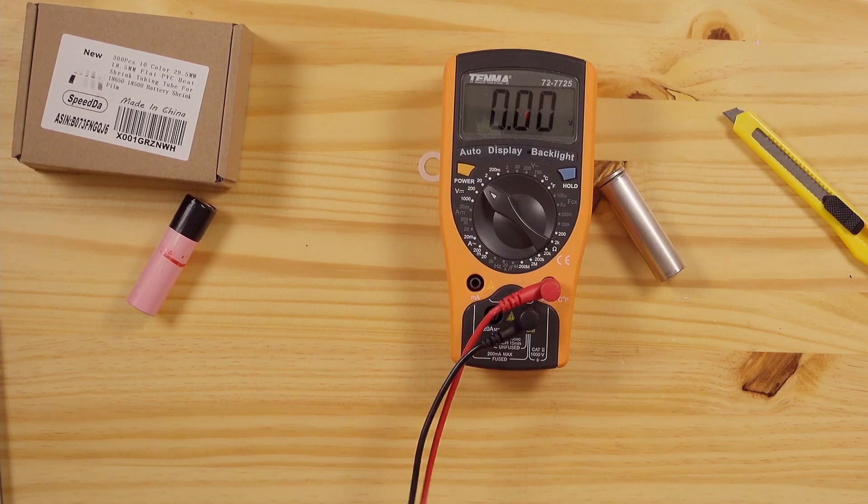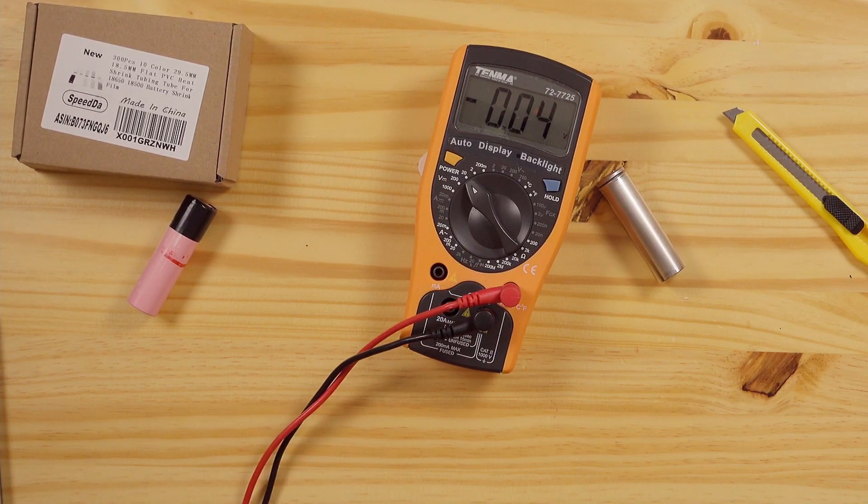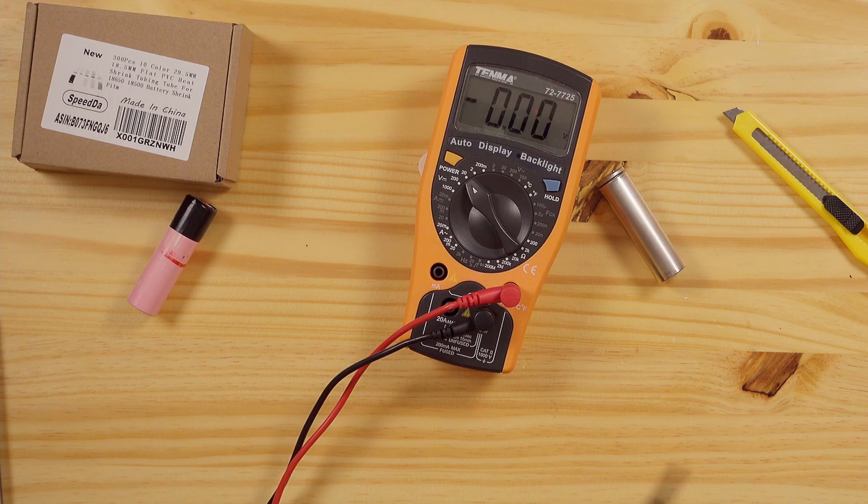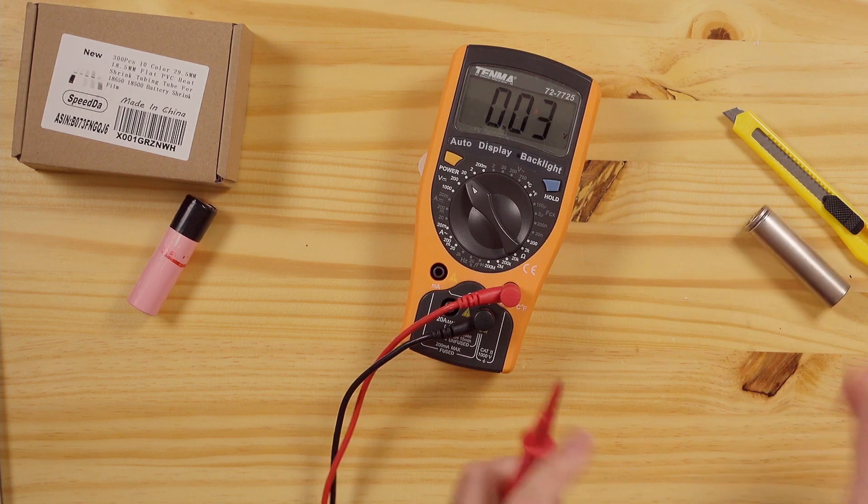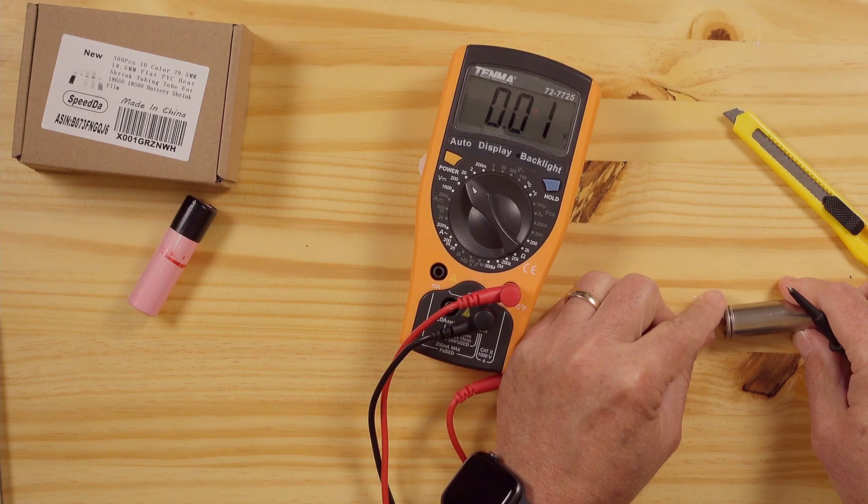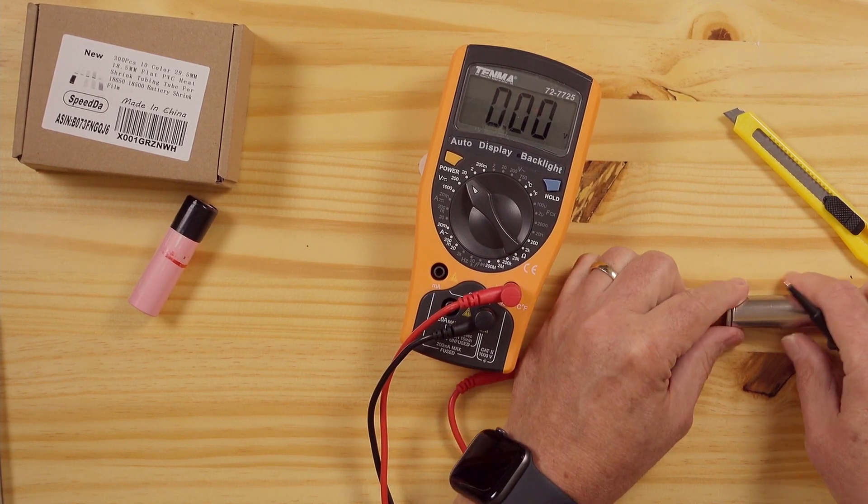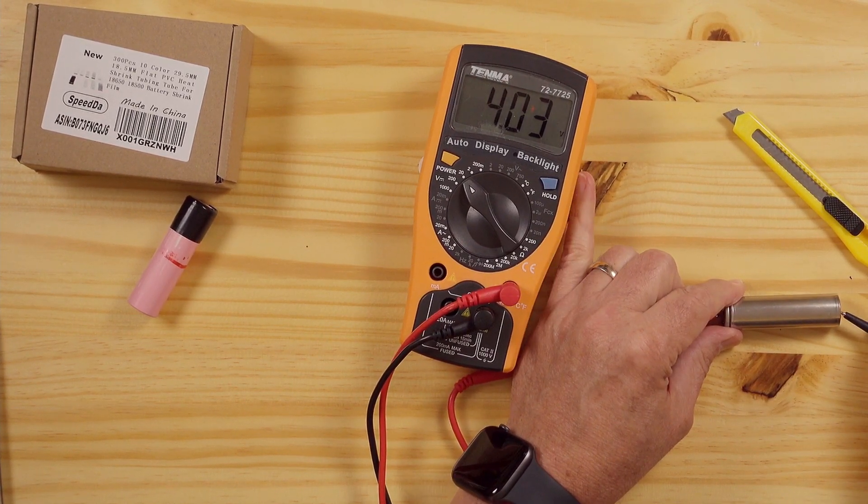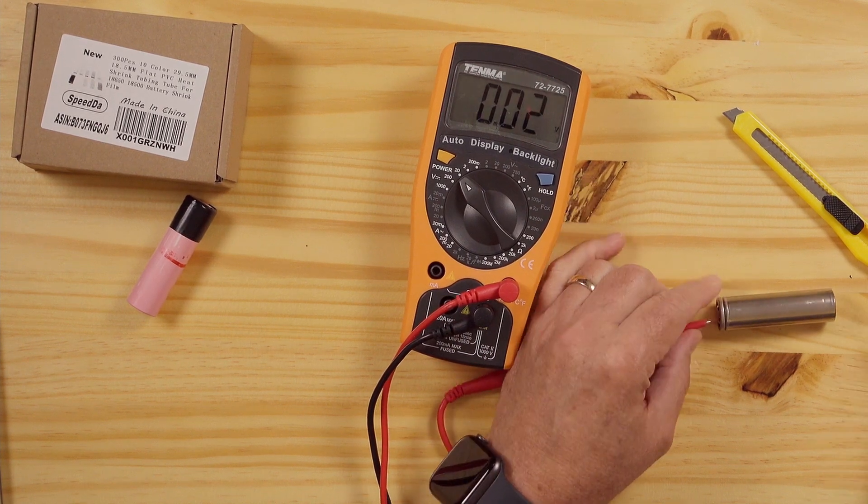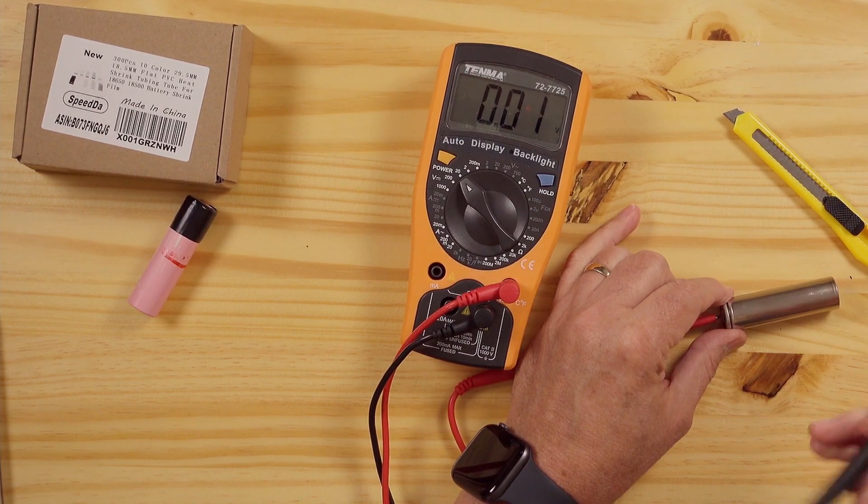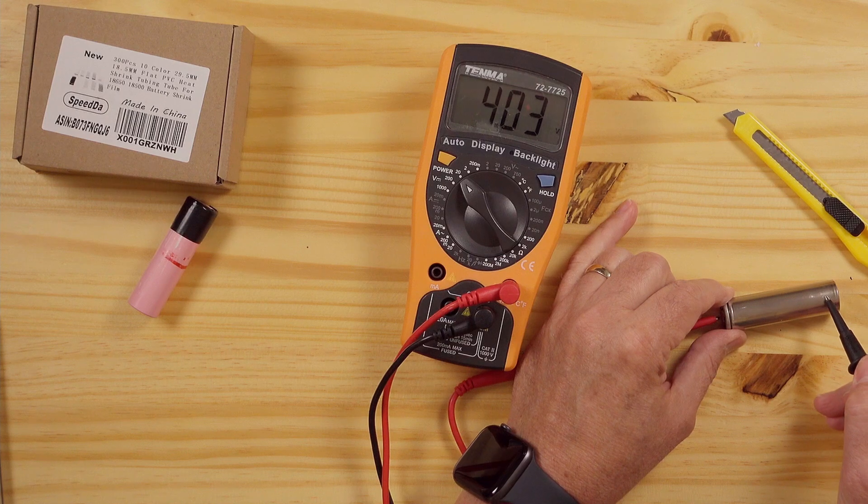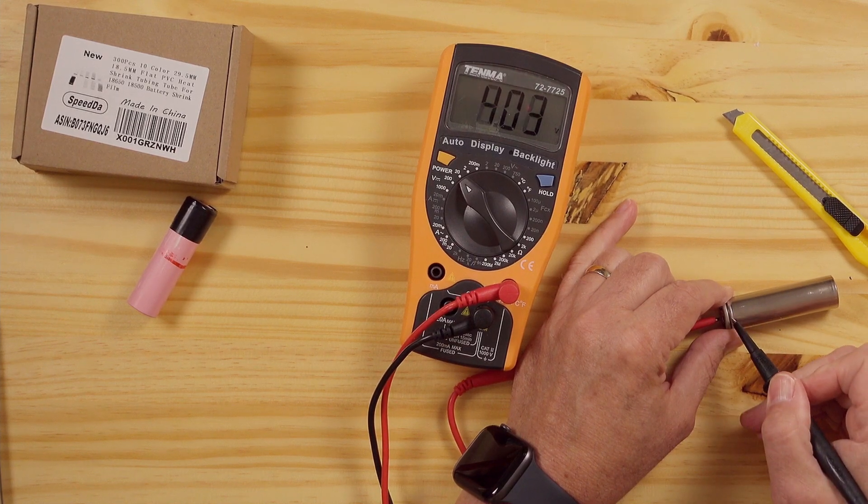I'm going to use my trusty voltmeter here. We can see from the positive to the negative we've got 4.03 volts. But we also see that the negative part of this battery goes all the way up the case.